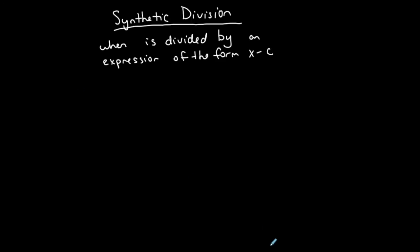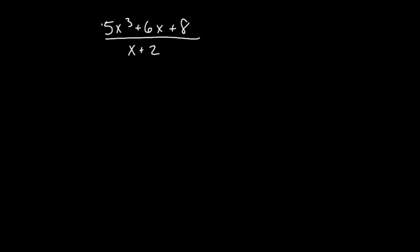One more example using synthetic division. I have 5x to the 3rd plus 6x plus 8, divided by x plus 2. Again, I want to ask the question, can I use synthetic division? Because if I cannot, I have to go back into long division. Well, I'm dividing by an expression of the form x minus c. In this case, x minus negative 2. My c is negative 2. c is always the opposite of what this is in this form. So take the opposite of this number. So I can use synthetic division.